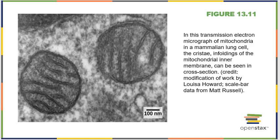This is a transmission electron micrograph of mitochondria in a mammalian lung cell. Eukaryotic cells can have anywhere from a few mitochondria to a few thousand. When we look at mitochondria there are some interesting things to discuss: one, they have their own DNA; two, they copy themselves through the process of binary fission; and three, they have their own membranes. Mitochondria have an internal membrane and an external membrane.